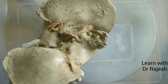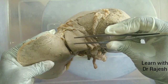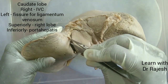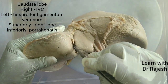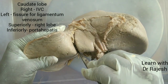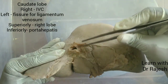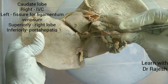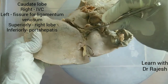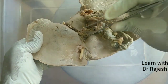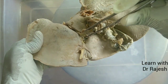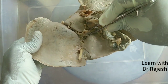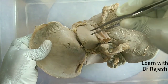The boundaries of the caudate lobe are: bounded to the right by the inferior vena cava, bounded to the left by the groove for ligamentum venosum, superiorly it is continuous with the right lobe, and inferiorly it is bounded by the porta hepatis — the area where structures enter or leave the liver, including the hepatic artery, portal vein, and other structures.